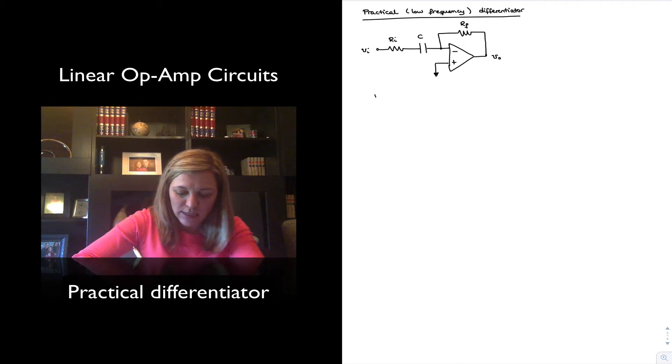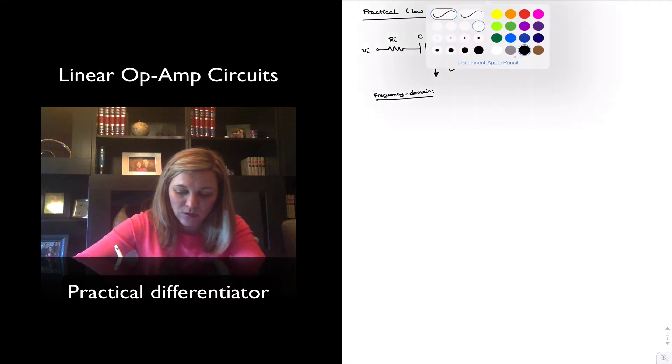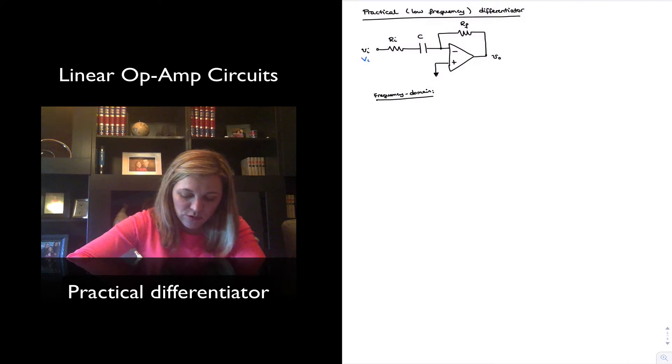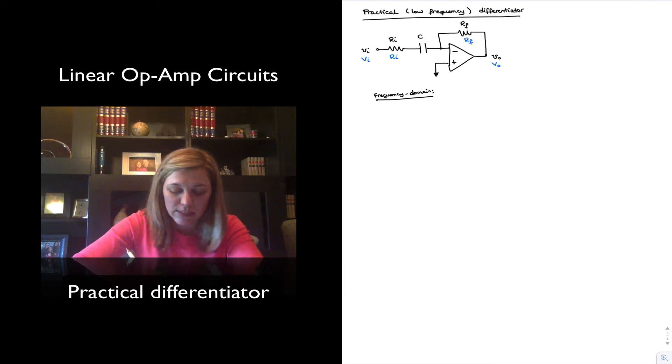Let's go ahead and do the analysis of the circuit in the frequency domain. I'm going to replace the components by their frequency domain equivalents. So, phasor v in, phasor v out, and the resistors stay the same. Their impedances are just equal to the resistances, but for the capacitor the impedance is 1 over j omega c.